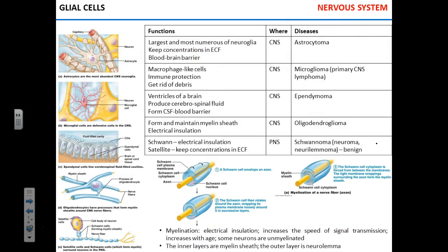Before we move on to anatomy, we'll start with micro-anatomy of the nervous system and talk about glial cells first. Glial cells allow neurons to perform their function. They do not participate in information transmission — they make sure neurons are nourished, protected, and myelinated. The most abundant type of glial cell is the astrocyte, named for its star-shaped appearance, which provides several supportive functions to neurons.